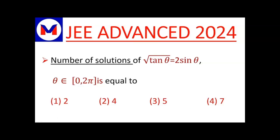The next question for the JEE Advanced 2024 series: find the number of solutions of √(tan θ) = 2 sin θ, where θ belongs to the interval [0, 2π]. The options are 2, 4, 5, or 7. That is, we have to find how many values of θ satisfy this equality in the given interval.